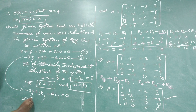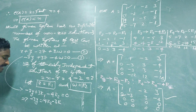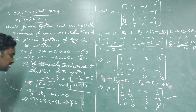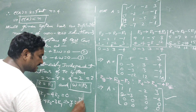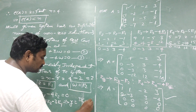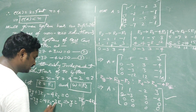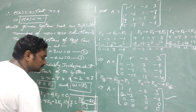From the second reduced equation, -3Y + 3Z - 4W = 0, substitute Z = K1 and W = K2: -3Y + 3K1 - 4K2 = 0, so -3Y = 4K2 - 3K1, giving Y = (3K1 - 4K2) / 3.